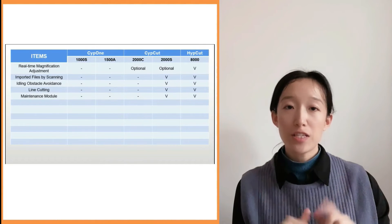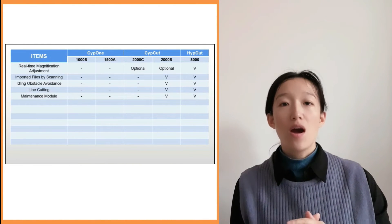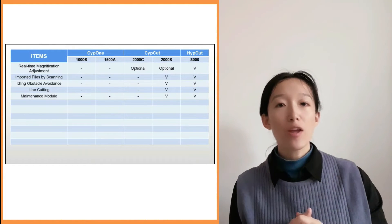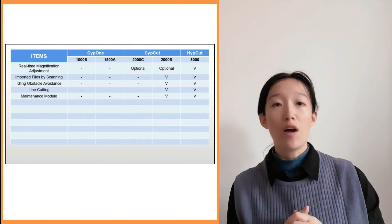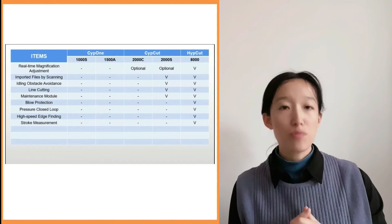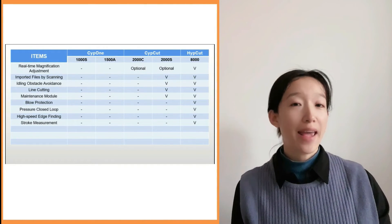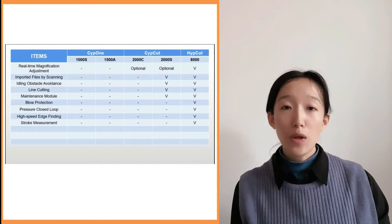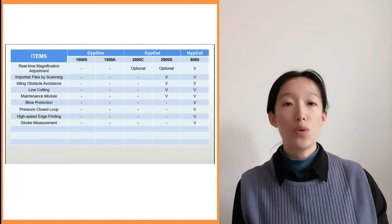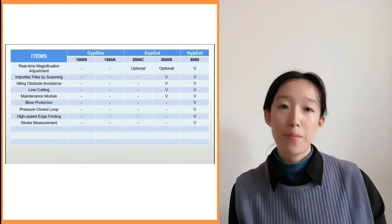The functions supported by 2000I and 8000 systems are: import files by scanning, handling obstacle avoidance, line cutting function, and maintenance module. The functions supported only by 8000 are: blow protection, air pressure closed loop, high-speed ad funding, and stroke measurement.